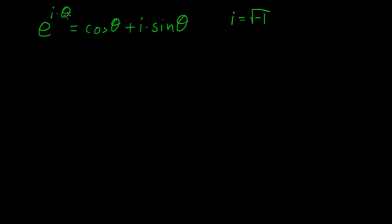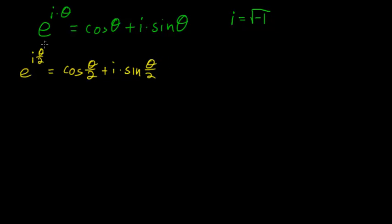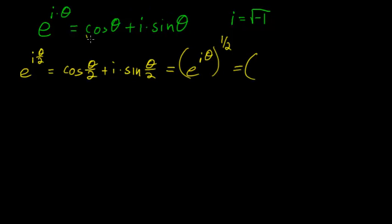So if instead we have e to the i times theta over 2, that is equal to the cosine of theta over 2 plus i times the sine of theta over 2. But giving this an angle of theta over 2 is the same thing as starting with the original identity and taking the square root of it. In other words, this is equal to e to the i times theta raised to the 1/2 power, and it's also equal to the square root of the cosine of theta plus i times the sine of theta.